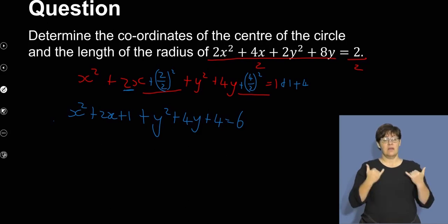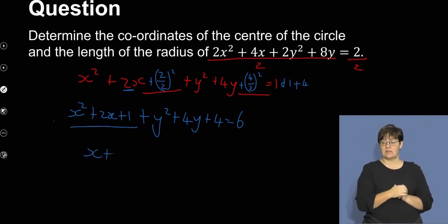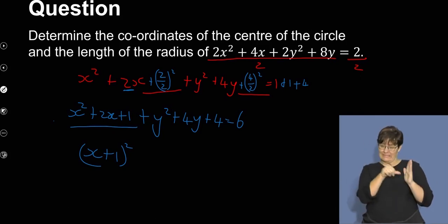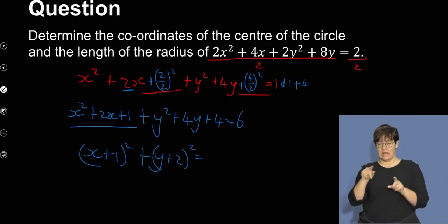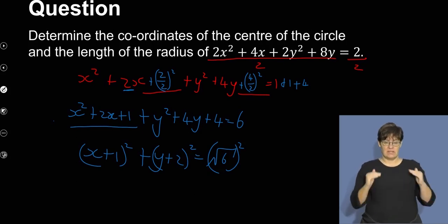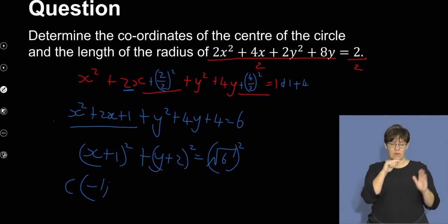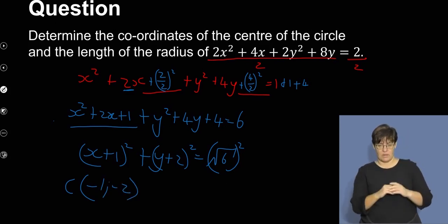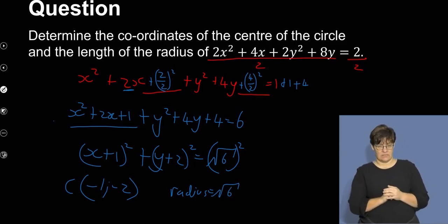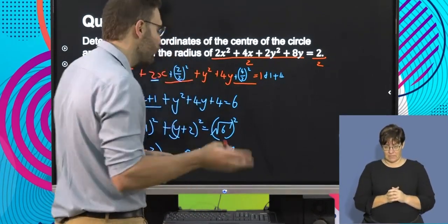Now I factorize the x section and the y section. I get (x plus 1) squared plus (y plus 2) squared equals (√6) squared. Now in standard form, the center: x plus 1 shifts it left, so x-coordinate is minus 1; y plus 2 shifts it down, so y-coordinate is minus 2. The center is (-1, -2) and the radius equals √6 units.